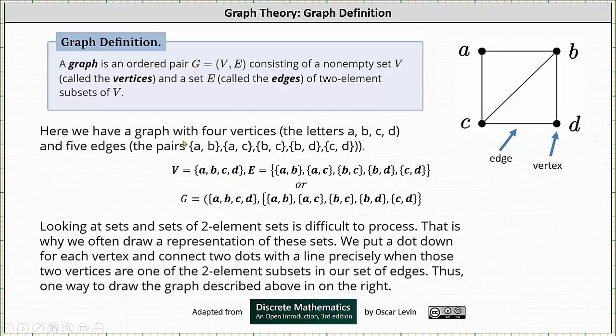Looking at sets and sets of two-element sets, it's difficult to process. That is why we often draw a representation of these sets. We put down a dot for each vertex and connect two dots with a line precisely when those two vertices are one of the two-element subsets in our set of edges. Thus, one way to draw the graph described above is shown on the right.